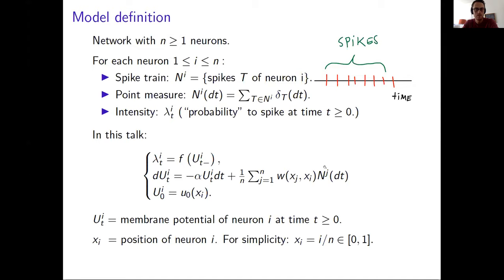And then there is the second term here where we introduce the dependence of the model. So essentially it's saying that whenever a neuron j spikes, it gives a quantity W of x_j, x_i. So x_j here will be the position of neuron j. I'm assuming that for simplicity x_j will be j over n, so everything is in the unit interval. And then at the end, what neuron i is feeling is an average effect of all those weighted spikes.